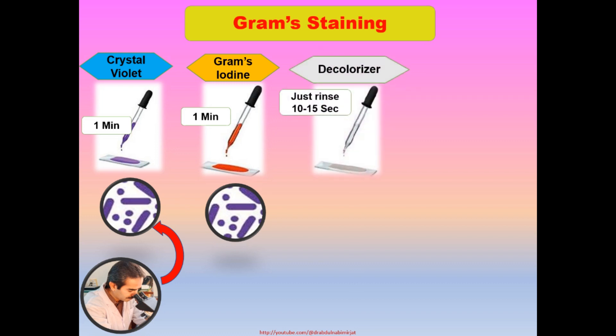Now we will apply the decolorizer just for 10 to 15 seconds. Be careful not to overuse the decolorizer, and after the decolorizer, immediately wash the slide with water. In this condition, all bacteria in the Gram-negative group will become colorless, while Gram-positive bacteria will still retain the primary dye crystal violet, as the Gram-negative bacterial cell wall is thin, so due to the decolorizer, they lose the color and become colorless.